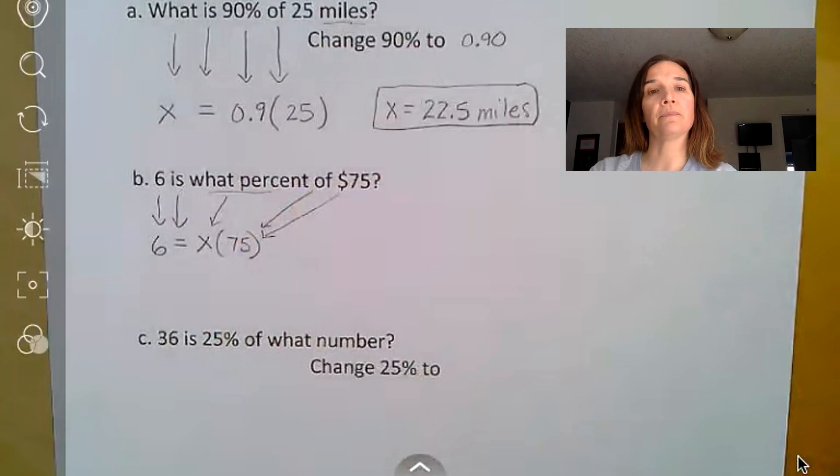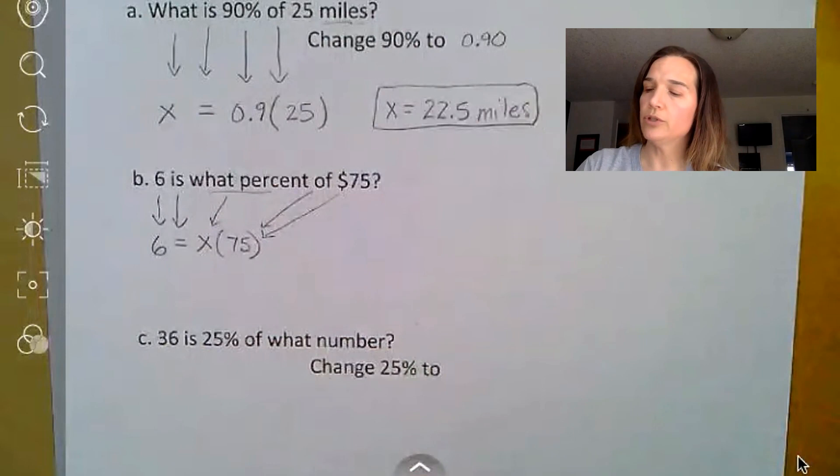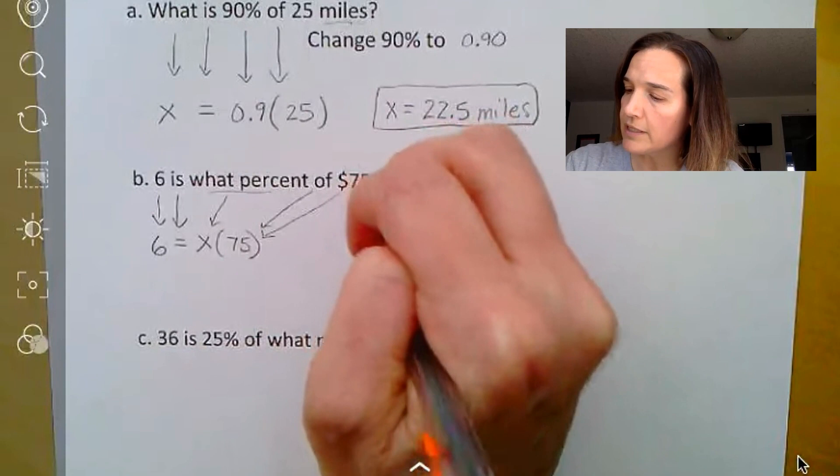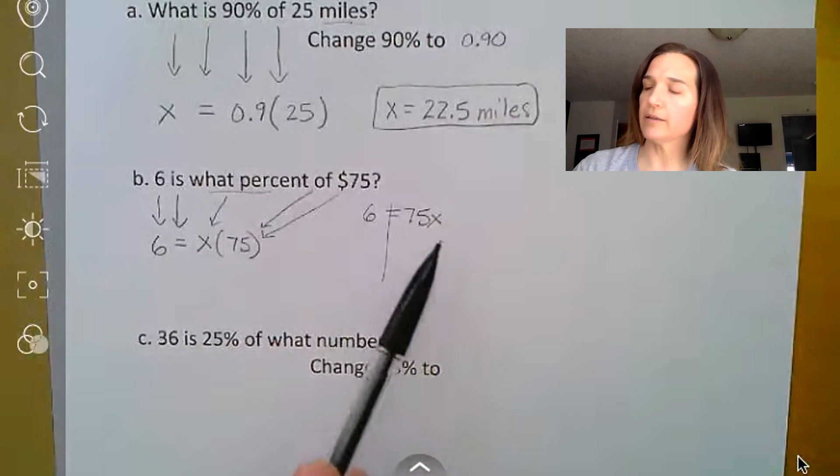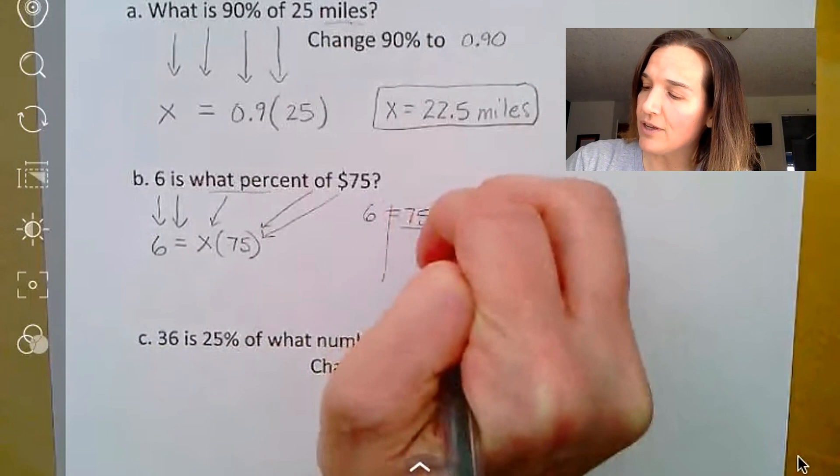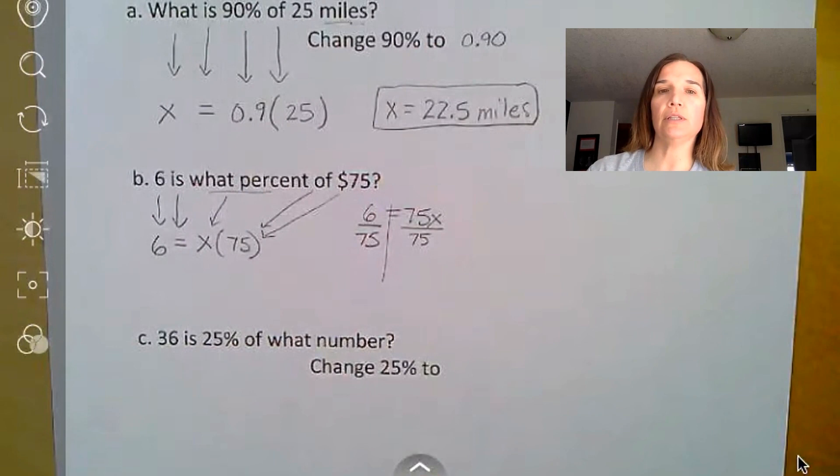Normally when you write an equation, if you have a number times a variable, what you do is you write the number first and the variable second. So just as a rewrite, I'm going to write 6 equals 75x. And remember, we have an equation. The one above it already had x by itself. This one does not, and we want to get x by itself. Right now it's being multiplied by 75. We do the opposite, which is divide by 75. And whatever you do to one side, you must do to the other.